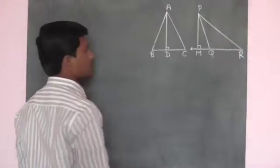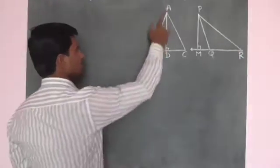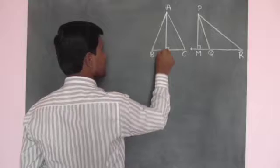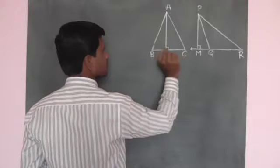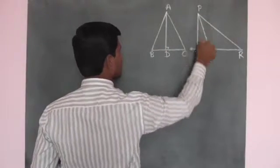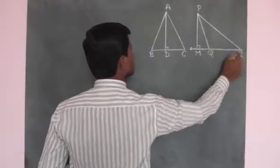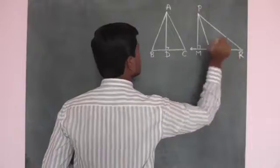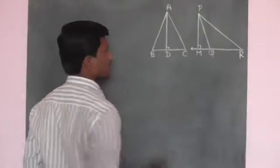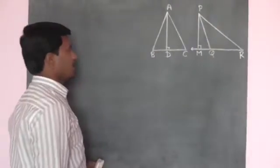Triangle ABC and triangle PQR. In triangle ABC, BC is the base and AD is the height. Similarly, in triangle PQR, QR is the base and PM is the height.